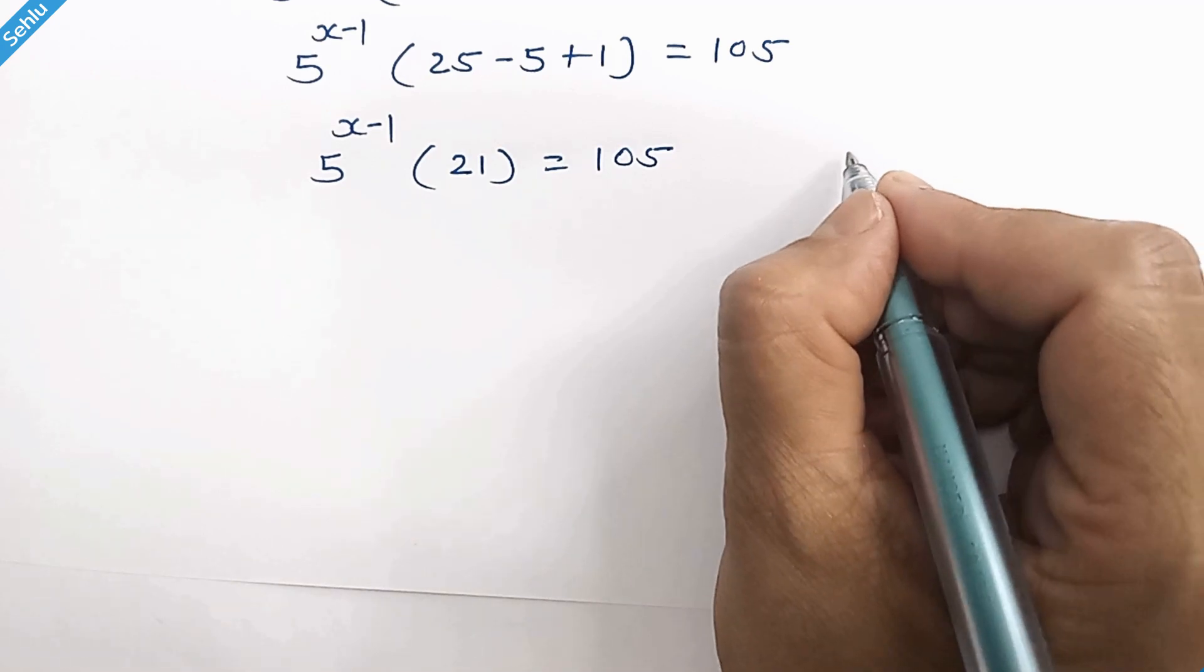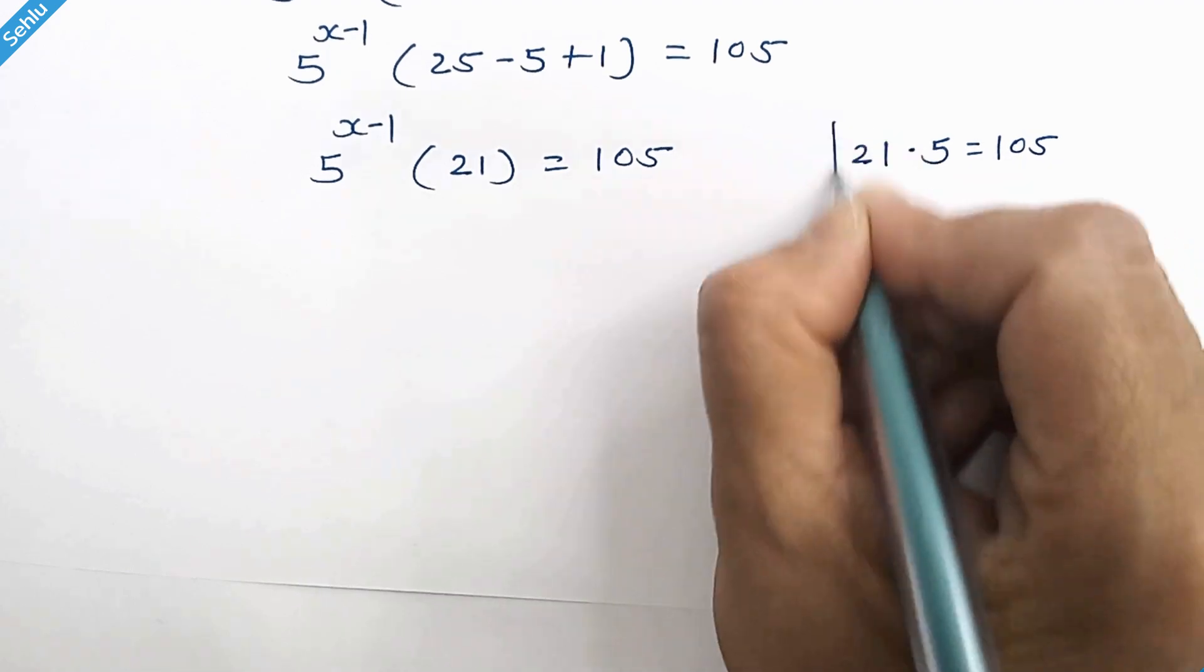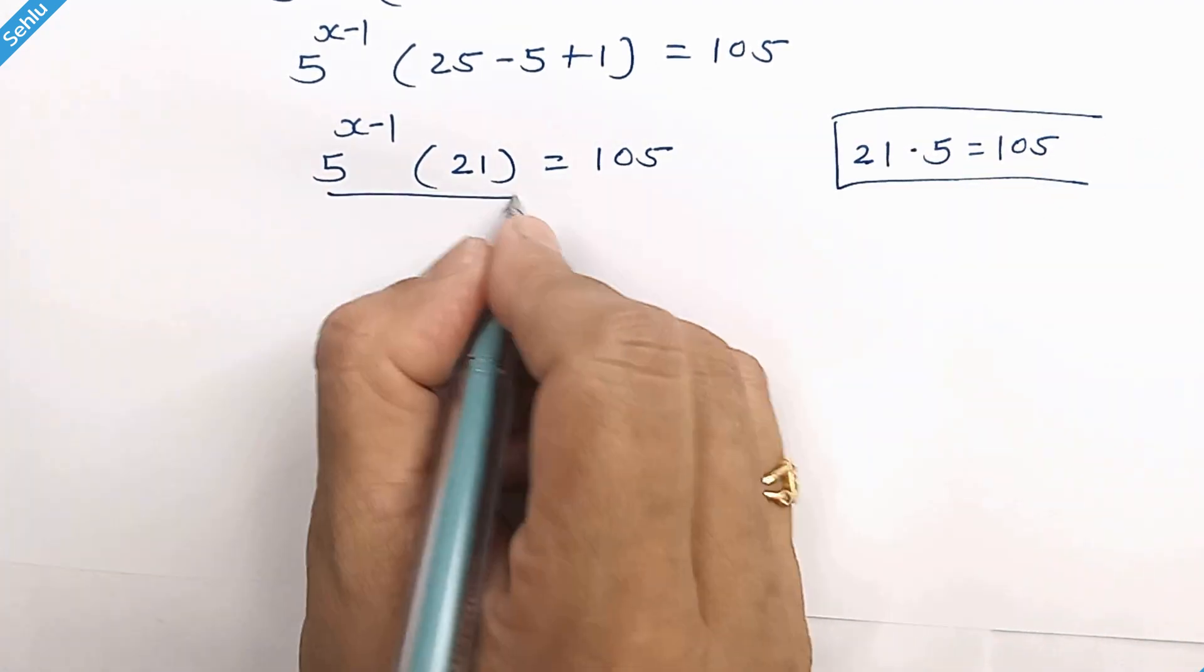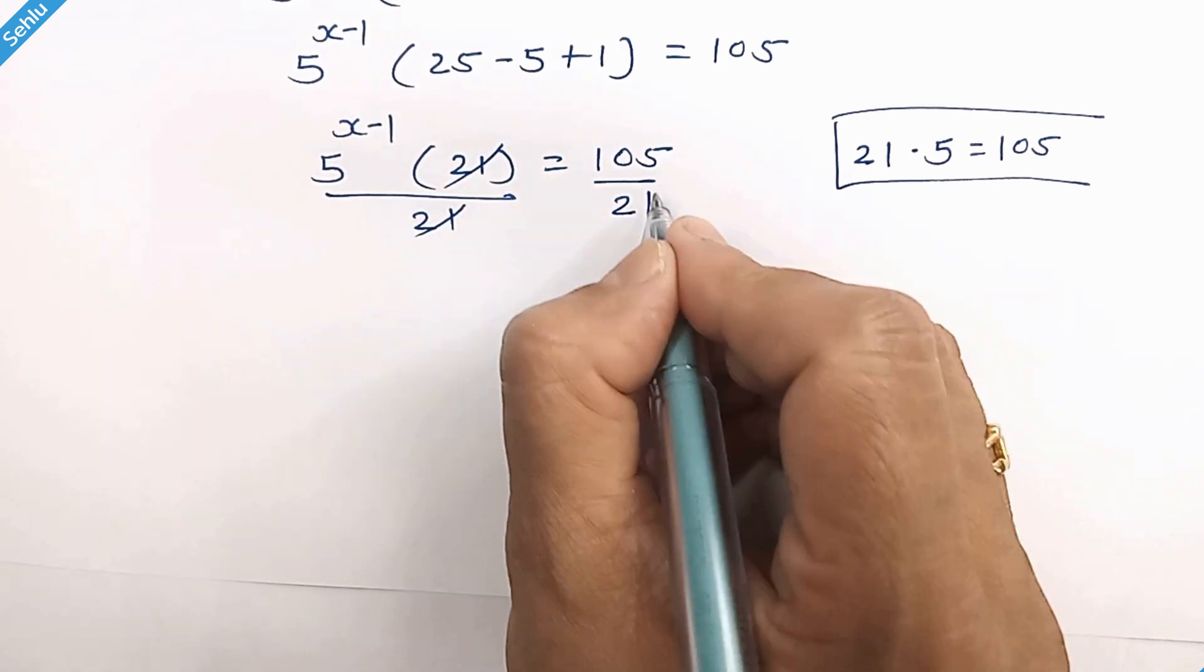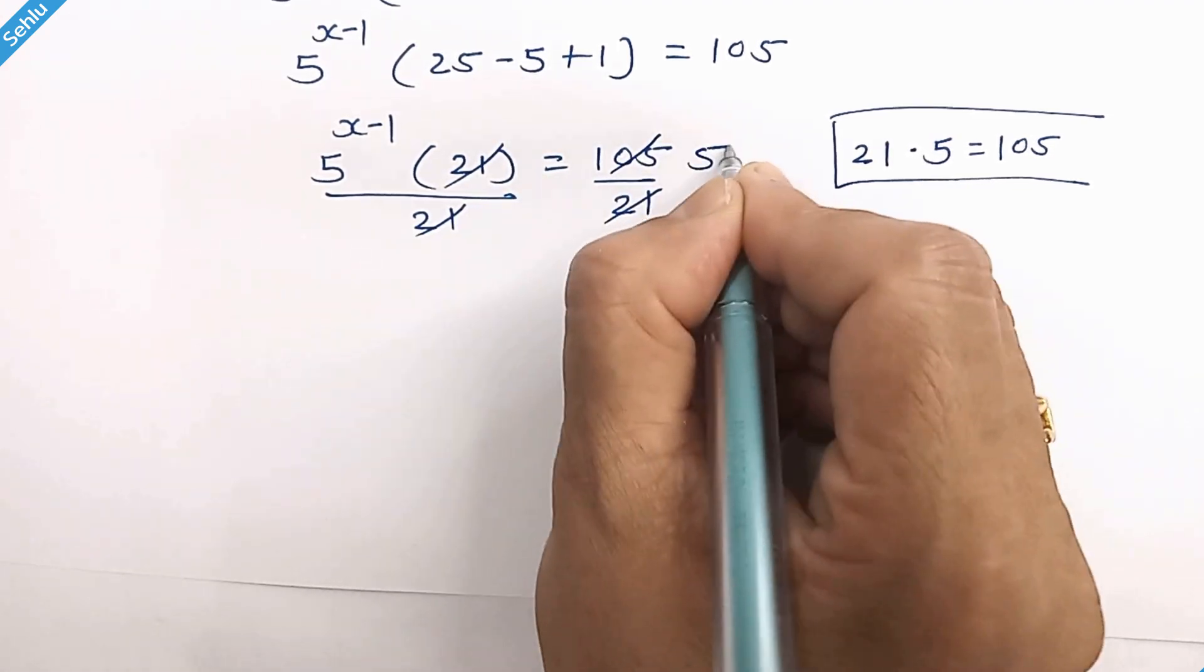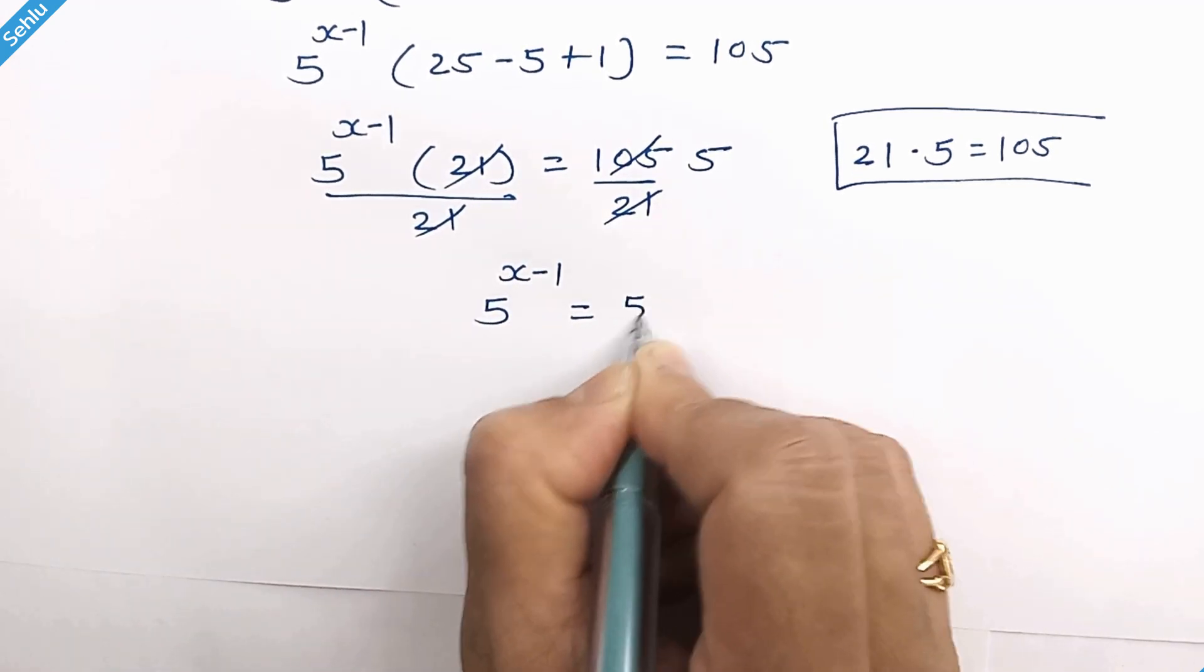Now if we recall the multiplication table of 21, 21 times 5 is 105. So if we divide both sides by 21, these get cancelled out and here we have 5. So 5 to the power x minus 1 equals 5.